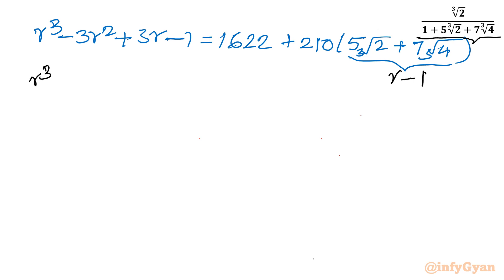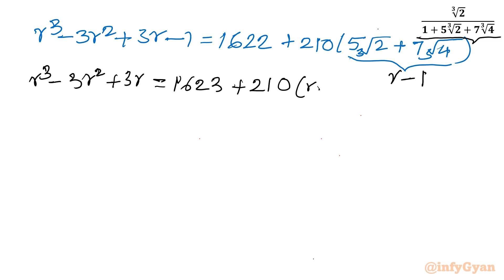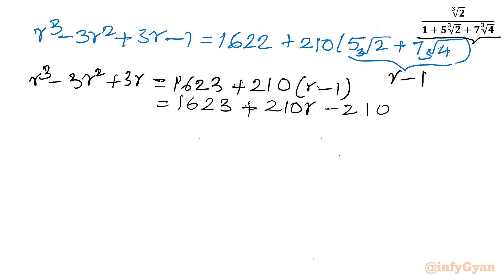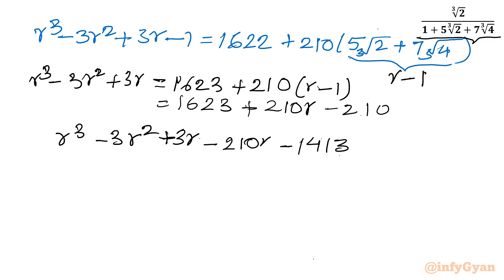Taking R³ minus 3R² plus 3R minus 1 to the right, the constant becomes 1622 plus 1, so 1623. Then I write 210 times (R minus 1) and expand it to get 210R minus 210. Collecting all terms to one side: R³ minus 3R² plus 3R minus 210R minus 1623 equals 0, which simplifies to R³ minus 3R² minus 207R minus 1413 equals 0.